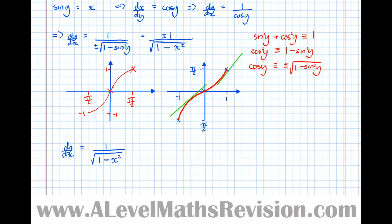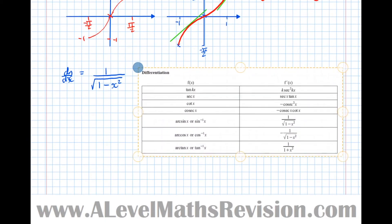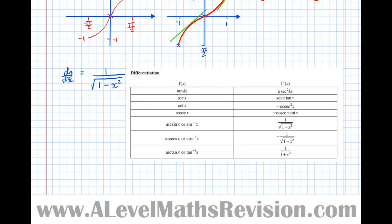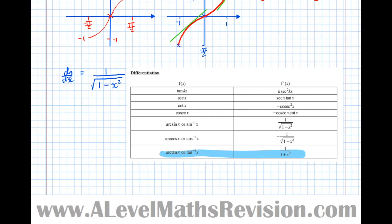We can do a similar proof for the differential of arccos x. These differentials are given in your formula book. The differential of arcsin x is 1/√(1 − x²); the differential of arccos x is −1/√(1 − x²), because the arccos graph always has a negative gradient. The differential of arctan x is also given there.